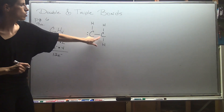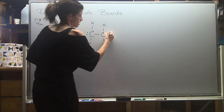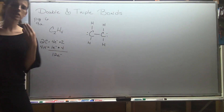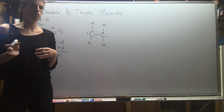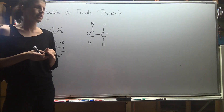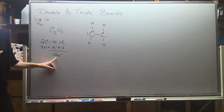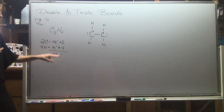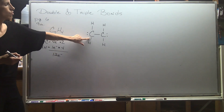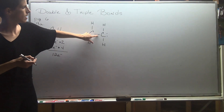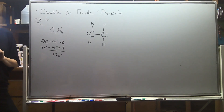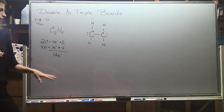Similar situation on the other carbon: two, four, six, then up to eight. Once I look at the octets and fix them all, I go back and make sure I only used 12 electrons. Counting up: two, four, six, eight, ten, twelve, fourteen. I've used 14 electrons and that doesn't seem right — I used too many.